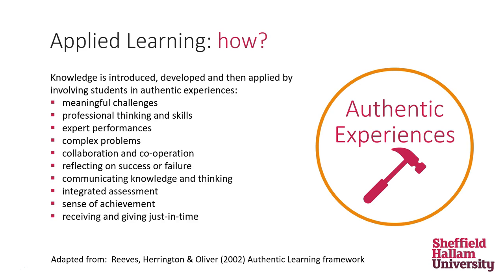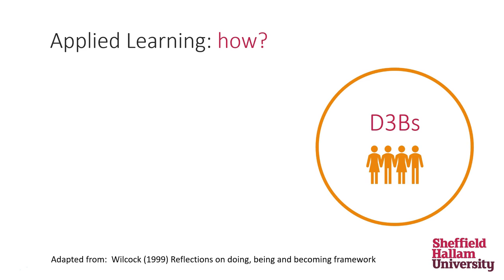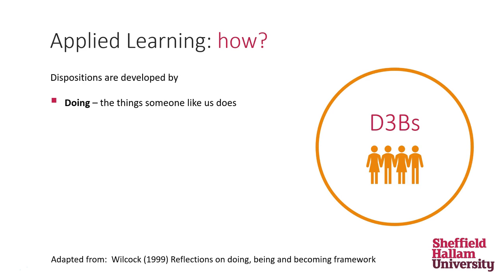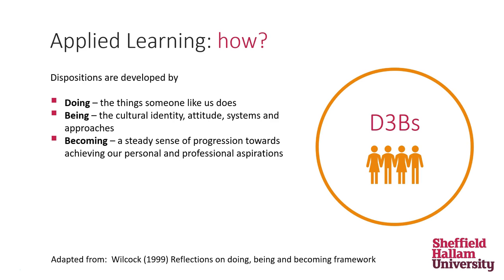That's the first of the three frameworks. Secondly, we can look at the D3Bs. This work comes from Occupational Health, and Wilcox offers the D3B framework which can be used to outline how dispositions are developed: by doing the things someone like us does; being — the cultural identity, attitudes, systems and approaches we use; becoming — a steady sense of progression towards achieving our personal and professional aspirations; and belonging — feeling valued and part of a community or network.